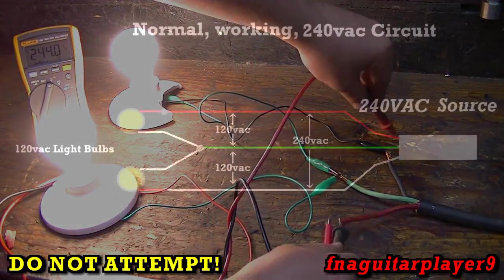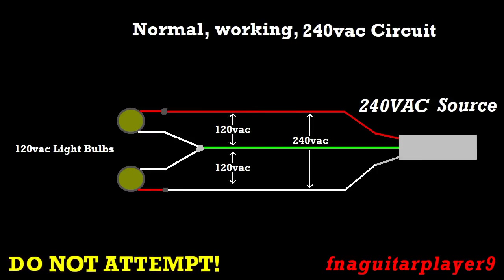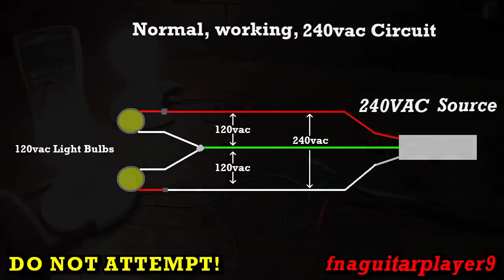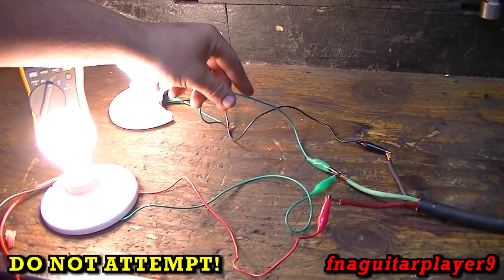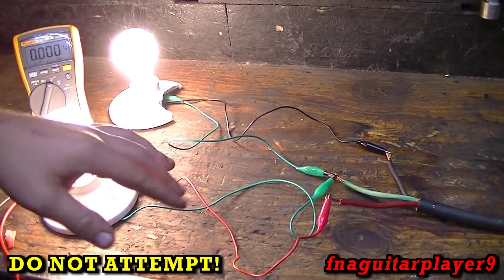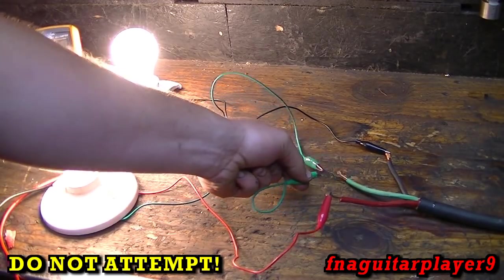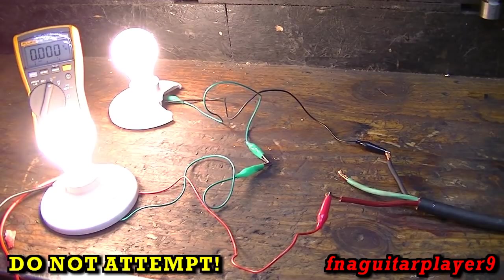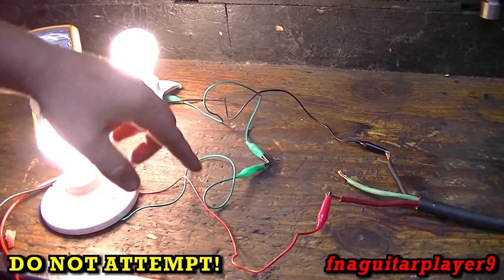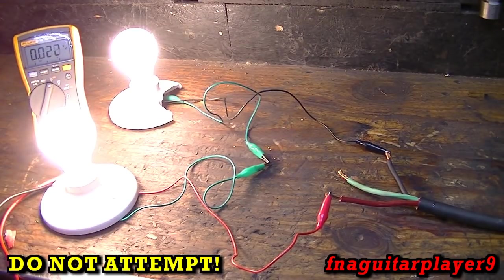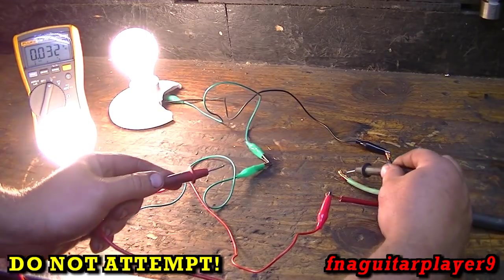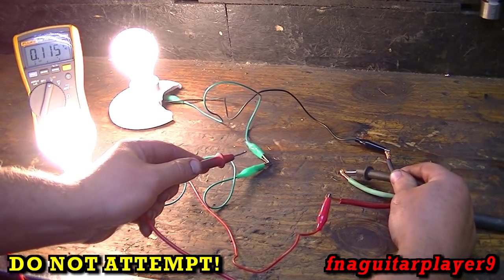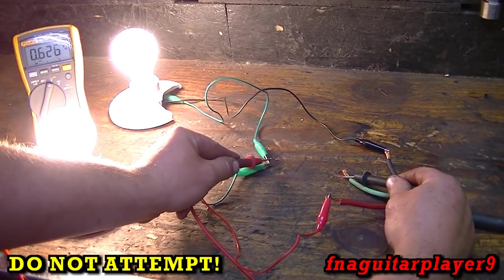Now across the outside legs, I'm getting 244. So now, since this is a balanced circuit, the neutral actually isn't doing anything. You see now both bulbs are hooked in series to the 220, and there should be close to zero volts difference between these two. And that's 0.6 difference.